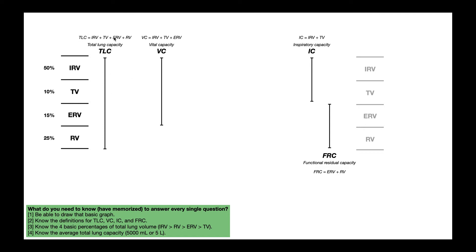These formulas are really the definitions you need to know. Knowing the formulas for each of these is what's going to help you on the NPTE. The last thing to memorize — number four — is that the average total lung capacity for a healthy adult is 5,000 milliliters. You can use five liters, but it's more helpful to remember 5,000 milliliters.